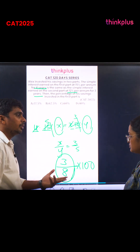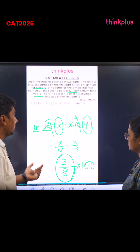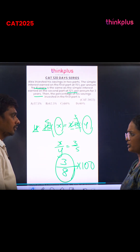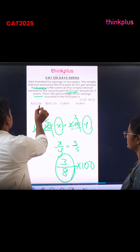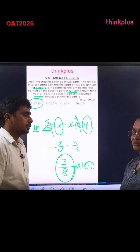What is 1/8? 12.5. So 3/8 is 37.5. The answer is 37.5%.